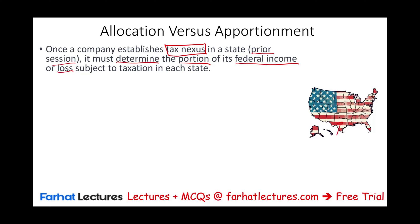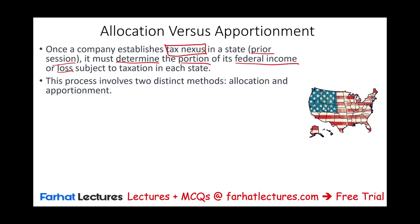You could be required to file in Texas, California, Washington, Florida, and so on — but the question is how much of your federal income to allocate to those states. The process involves two methods: allocation and apportionment. What's the difference between the two? That's what we need to learn here.